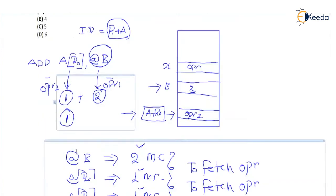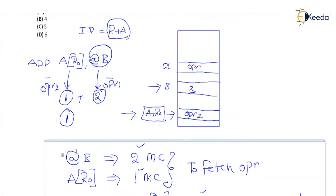So this is the answer: four memory cycles are required to execute this instruction.